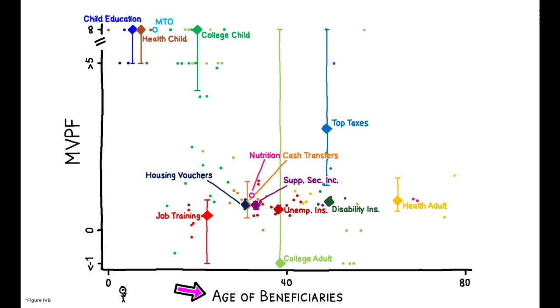MVPFs are plotted against the average age of each policy's beneficiaries. Policies on the left primarily affect children, and those on the right affect adults. So, what do we see?